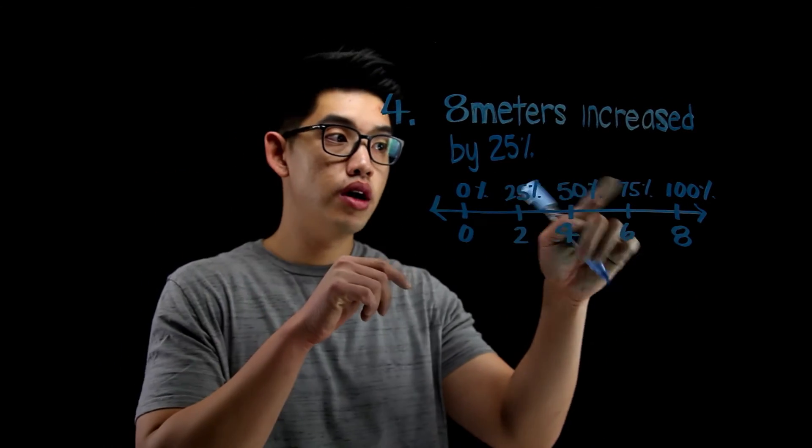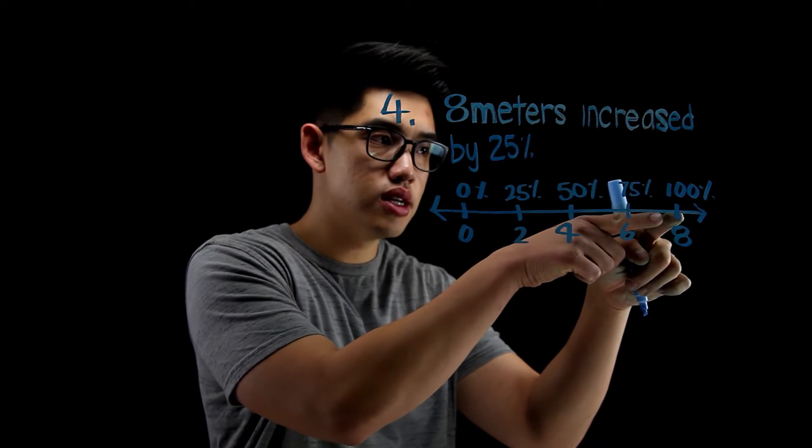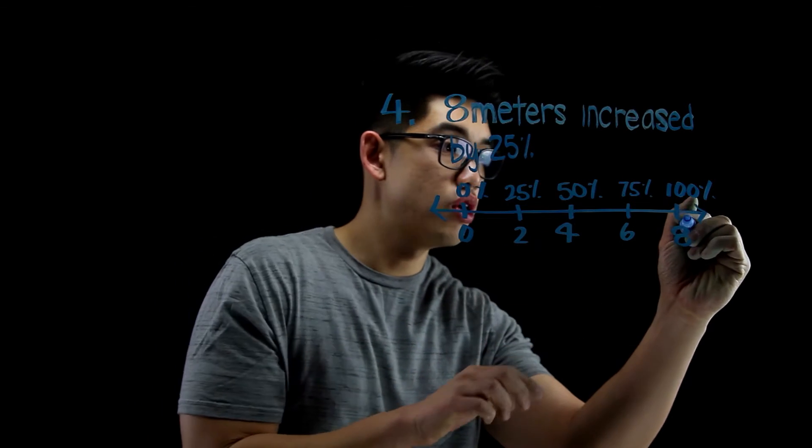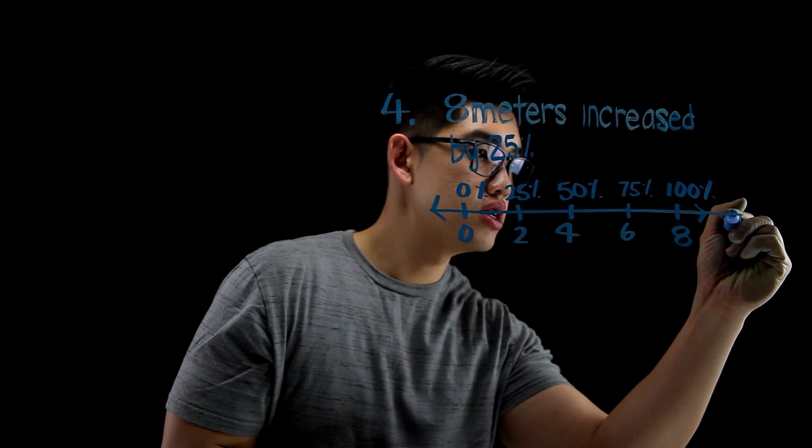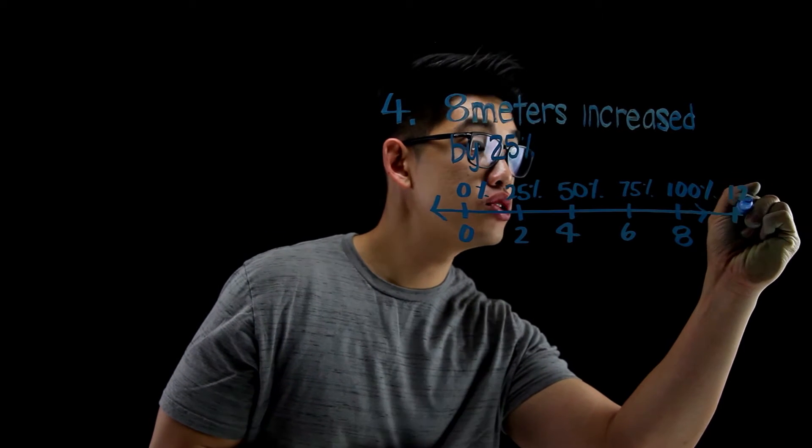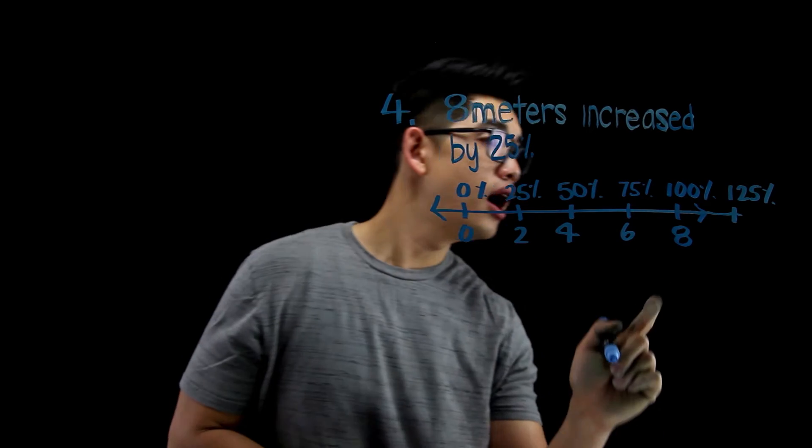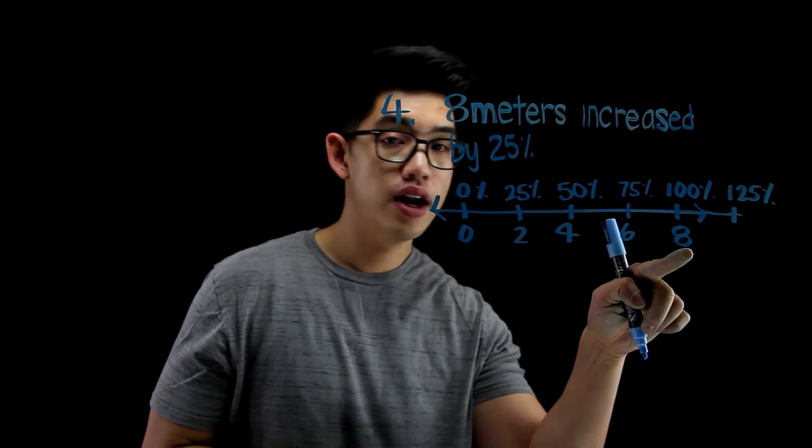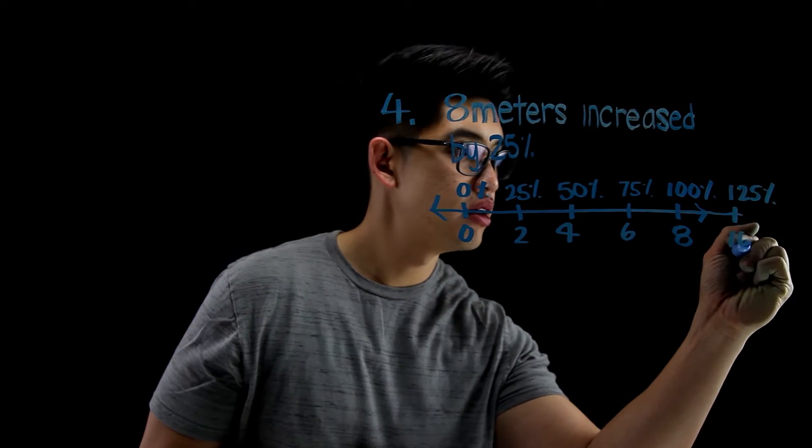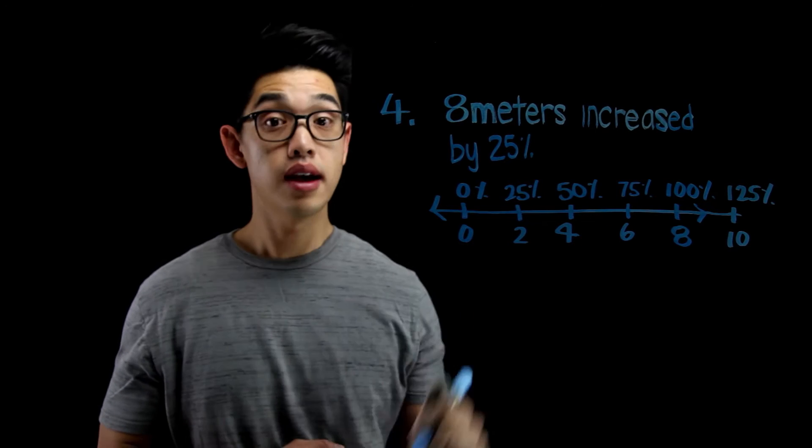But wait! I don't want 100%. I want to increase this by another 25%. So this is another 25%. This is going to be 125%. And then, so if I add another 2 right there, that's going to be 10. My answer is 10. It's going to be 10 meters.